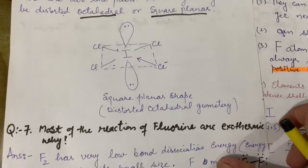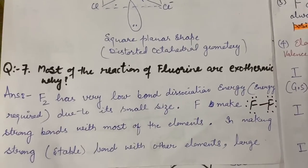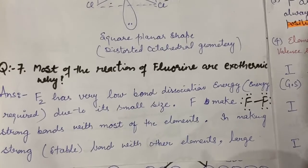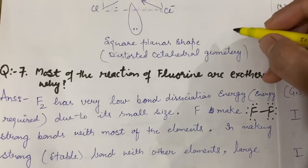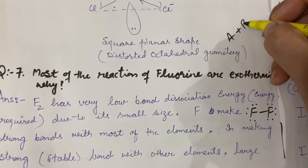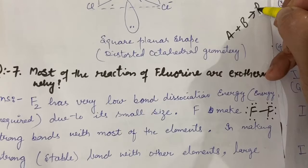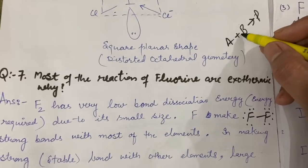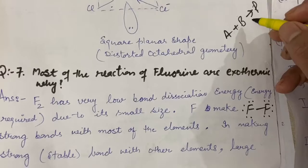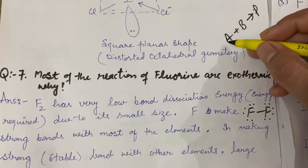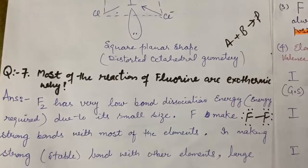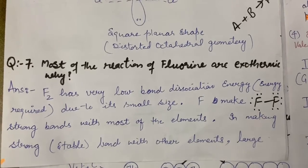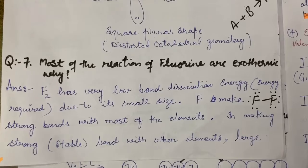The next question is: most of the reactions of fluorine are exothermic. Exothermic reactions are those in which a very large amount of energy is released. Exothermic reactions are possible when two atoms or molecules react to form a product where A and B form a very stable and strong bond. To form a stable or strong bond between two atoms, a large amount of energy is released. Energy and stability are inversely proportional to each other.